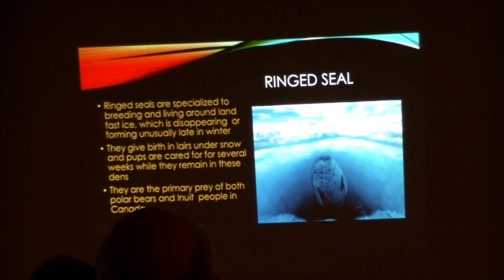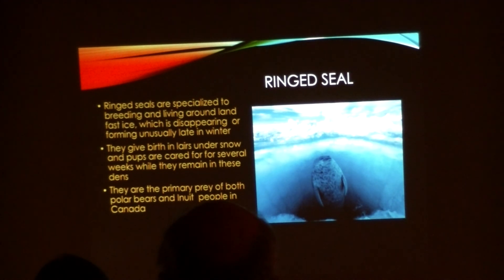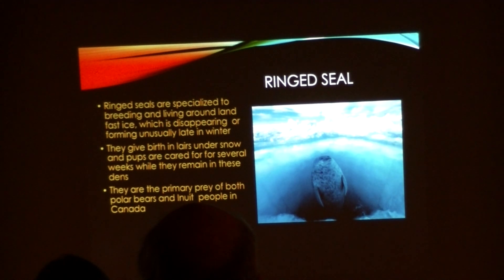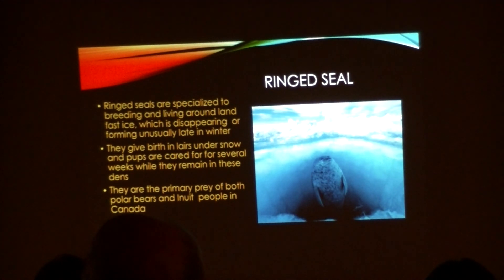This is why a lot of these species live in the Arctic and Antarctic oceans during the winter — because the water is actually warmer for them than being out of the water would be. Since ring seals specialize in the land fast ice, and this is now starting to disappear or form unusually late in the wintertime, ring seals give birth in layers under the snow on the ice, and their pups are cared for several weeks while they stay in these lairs or dens. Ring seals are the primary prey of both polar bears and the indigenous Inuit peoples in Canada, making them a very important food source.